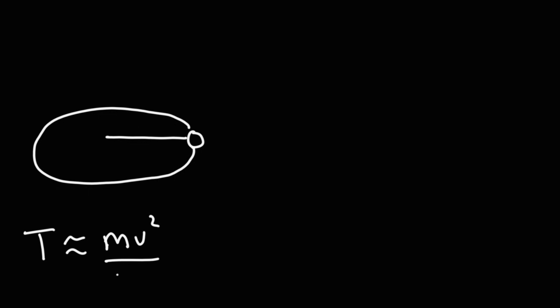Let's go back to horizontal circles. If you have a horizontal circle and the object is spinning in it, when V is high, the tension force is approximately equal to the centripetal force, mv squared over r. When the velocity is not high, this is not going to look like a perfect horizontal circle — it's going to be slightly slanted.